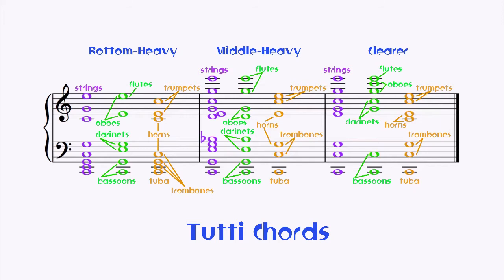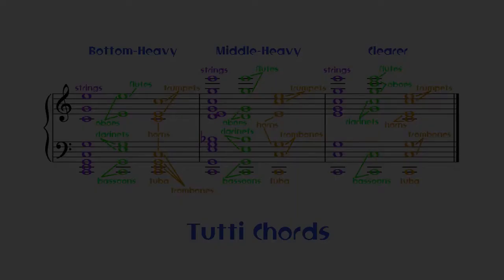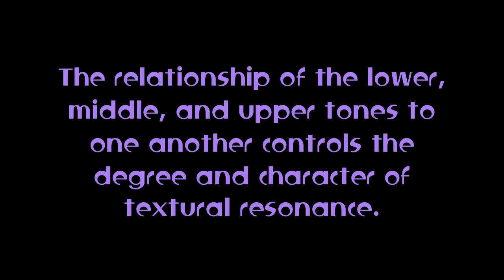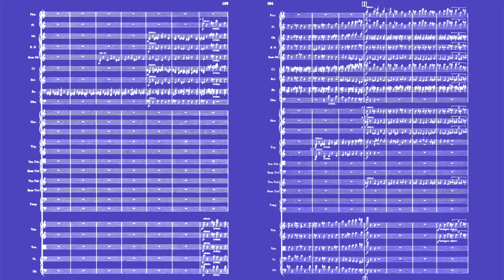And that's how we can sum up the quantum of harmonic resonance as a feature of vertical texture. The relationship of the lower, middle, and upper tones to one another controls the degree and character of textural resonance. That's such an important sentence, I'm going to repeat it: the relationship of the lower, middle, and upper tones to one another controls the degree and character of textural resonance. If you take one thing away from this lecture, let it be that — and take it directly to a score by Debussy, Ravel, or Gustav Holst.